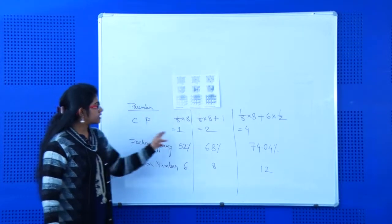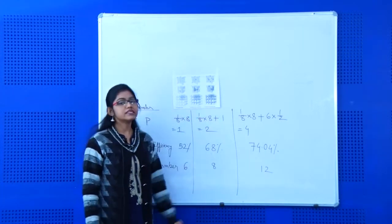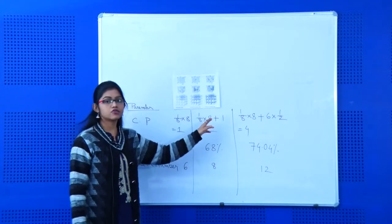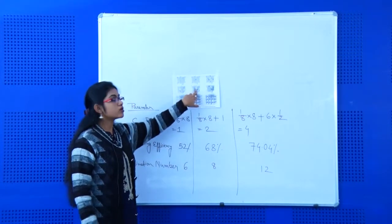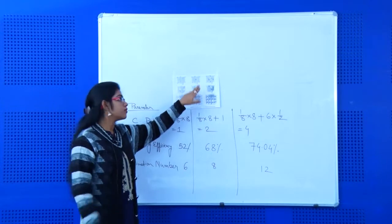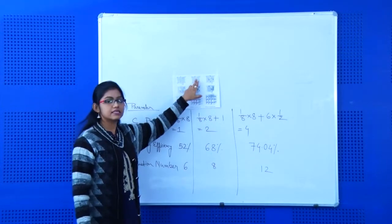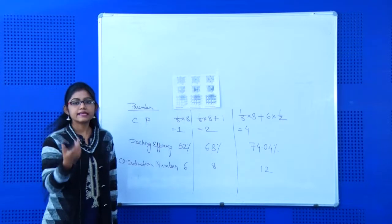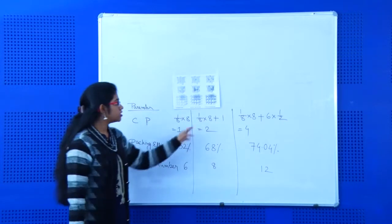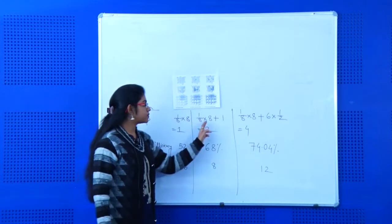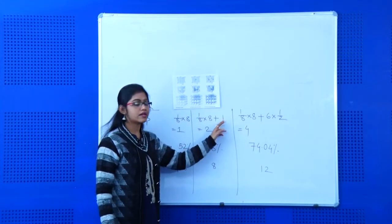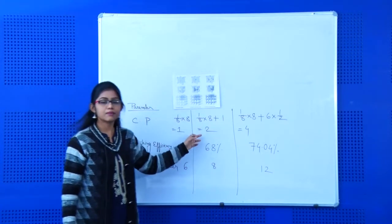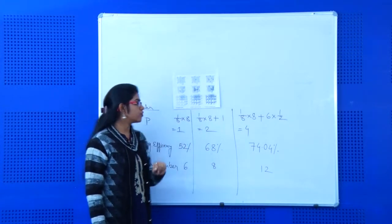In the same manner, for body centered cubic, there is one constituent particle inside the cell, plus eight corners containing eight constituent particles. So one-eighth multiplied by eight, plus one, equals two. The total number of constituent particles in BCC will be two.